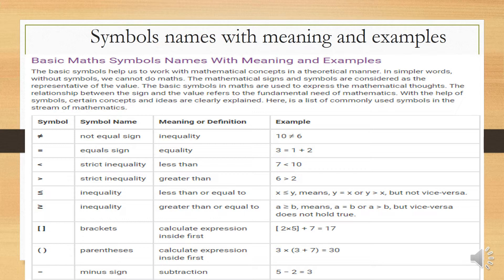The basic symbols help us to work with mathematical concepts in a theoretical manner. In simpler words, without symbols we cannot do math. The mathematical signs and symbols are considered as the representative of the value. The basic symbols in math are used to express mathematical thoughts or ideas, and the relationship between a sign and its value refers to the fundamental need of mathematics. With the help of symbols, certain concepts and ideas are clearly explained.